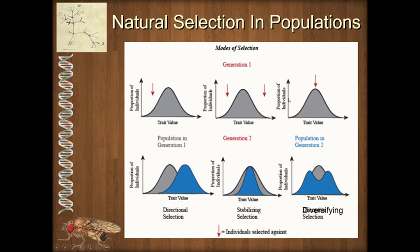I've got three different treatments of the same population here. In generation number one, we have the same distribution of traits across the population. The arrow here represents individuals that are selected against. In this example, individuals that are very short — or whatever trait this is — individuals at this extreme just don't do well. They don't reproduce as much, they maybe don't survive as well, and so their phenotypes are not represented as much in the next generation.